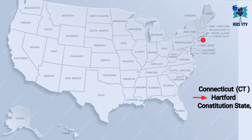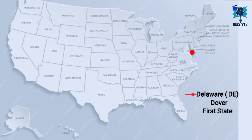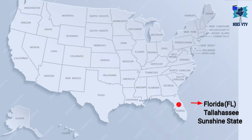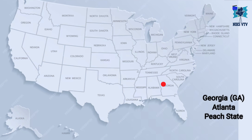Next state is Connecticut, abbreviation is CT, capital is Hartford, time zone is EST — that is Eastern Time Zone — and its nickname is Constitution State. Next state is Delaware, its abbreviation is DE, capital is Dover, time zone is EST, and its nickname is the First State. Next state is Florida, its abbreviation is FL, capital is Tallahassee, time zone is EST, and its nickname is the Sunshine State.